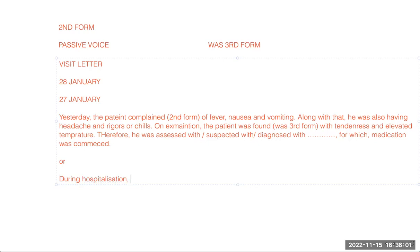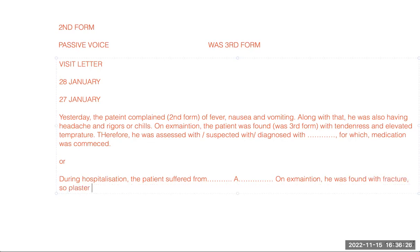During hospitalization, 'the patient suffered from' — again second form — same symptoms. Along with that, 'he was having' the same symptoms. On examination, 'he was found with' — same passive pattern — for example, with a fracture. So 'plaster cast was applied' — done by us, passive voice. Only the first one, symptoms, uses second form active voice; all the rest use 'was' plus third form passive voice. Also: 'pain-relieving medications were prescribed' or given. This is the only grammar we have in OET — that is why OET is the simplest test to take.